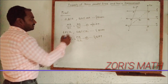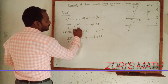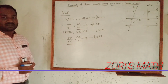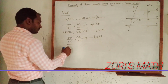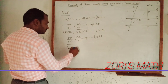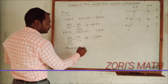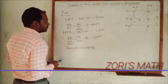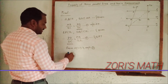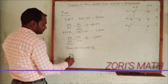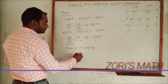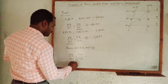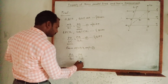From equation 1 and equation 2, the ratio in equation 1 and the ratio in equation 2 are the same. Therefore, from equation 1 and equation 2, we can write AB upon BC is equal to PQ upon QR. Hence proved.